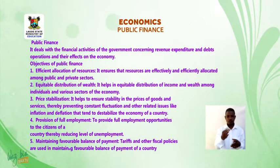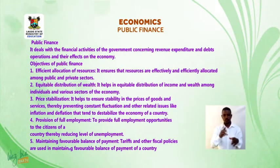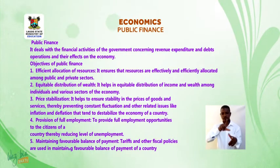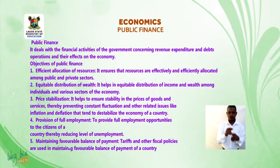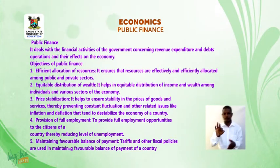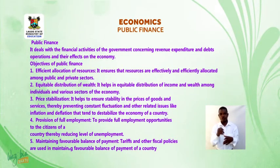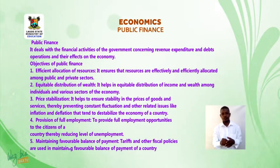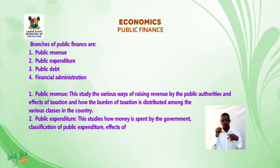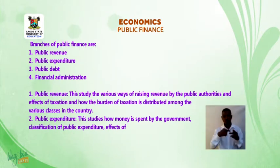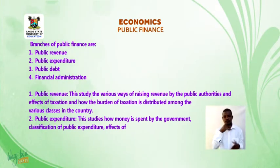Four, provision of full employment — to provide full employment opportunity to the citizens of a country, thereby reducing the level of unemployment. Five, maintaining favorable balance of payments — tariffs and other fiscal policies are used in maintaining a favorable balance of payments. Branches of public finance: one, public revenue; two, public expenditure; three, public debt; four, financial administration.